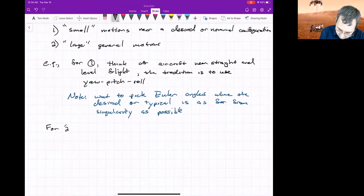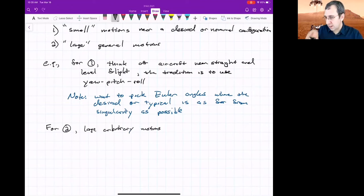For two, the large, in some sense, arbitrary motions. Maybe you've got a satellite that you want to be able to point in any arbitrary location. It's not just going to be pointing in one thing. It could be pointing anywhere. Think of the Hubble Space Telescope. It probably has to point at basically any part of the sky, which means it's got to be able to point anywhere.